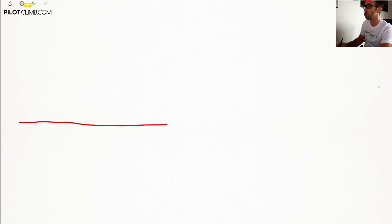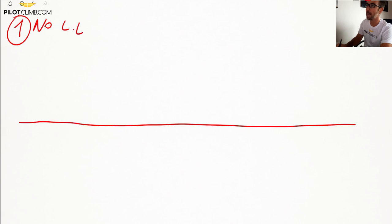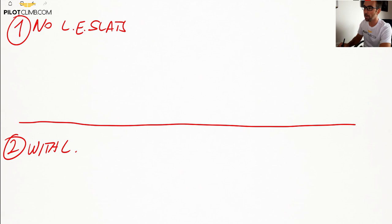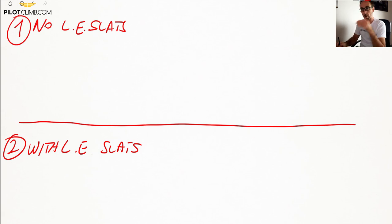Now that you understand what the leading edge slat is and why they are important on high speed planes, let's go to the whiteboard and I'll explain how the leading edge slot actually works — specifically why the airflow doesn't disconnect from the top of the wing when extending the leading edge slats. I'm going to make two examples and divide the screen in two: the first with no leading edge slats available, and the second with leading edge slats available. We'll see what happens during cruise and what happens during approach when you're getting closer to landing.